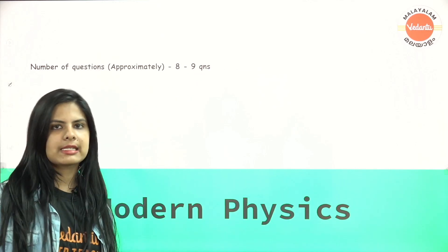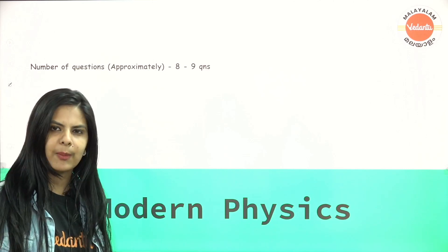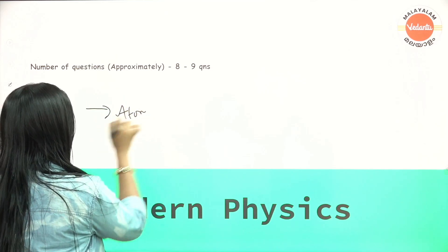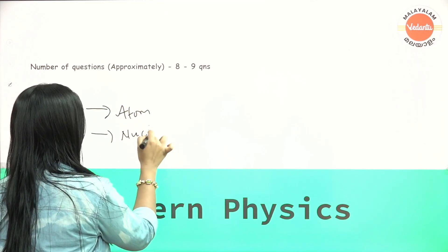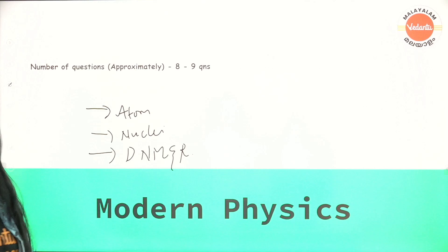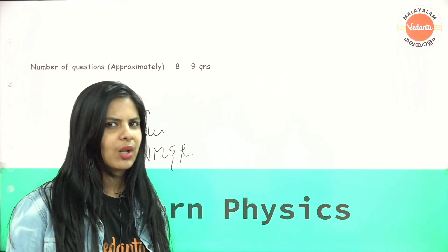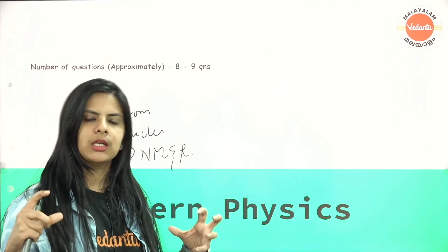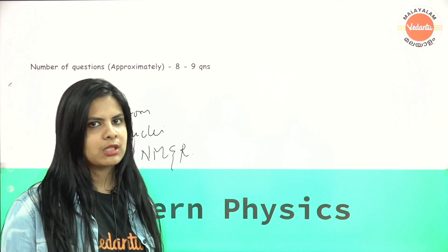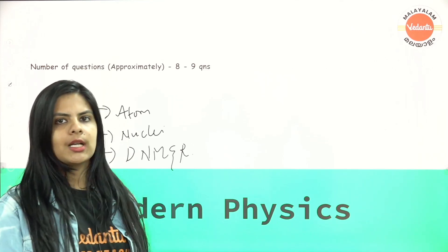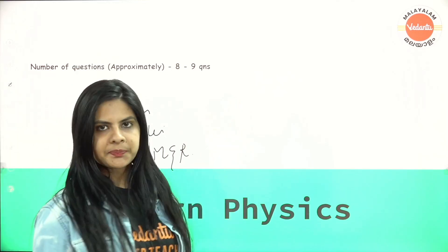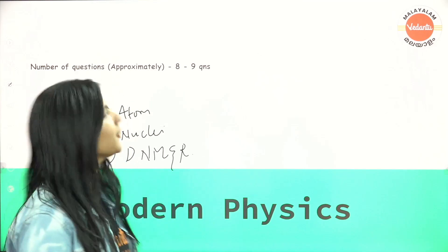Modern Physics can give you 8 to 9 questions. There are three chapters: atoms and nuclei, dual nature of matter and radiation, and semiconductors. These chapters can be challenging, but if you learn the concepts and spend two to three hours on previous question papers, you will be able to answer 8 to 9 questions.